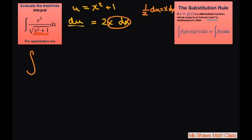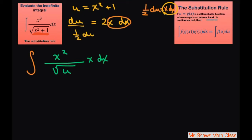Now we rewrite the integral in terms of u. We write x cubed as x squared times x, put the square root of u in the denominator, and the extra x becomes part of x dx. We already know that x dx equals 1 half du, so we can substitute that in — everything is now in terms of u, giving us 1 half du in place of x dx.